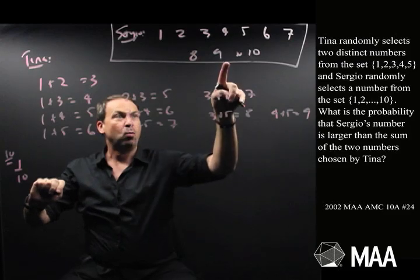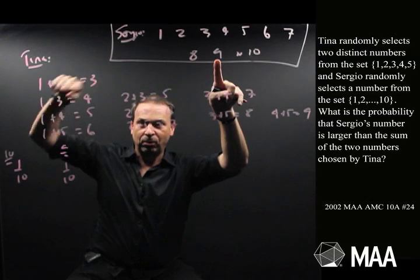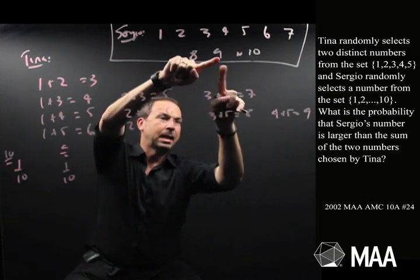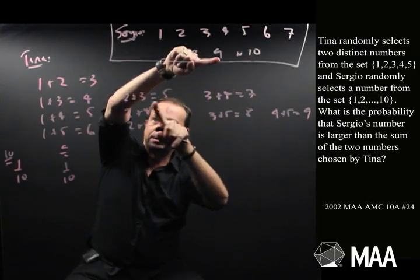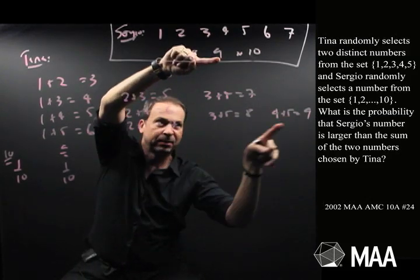Aha! One-tenth of the time, he'll get a 9. So, one-tenth of the time, he'll get a 9. And of all those times he gets a 9, he doesn't win automatically, because there are 10 outcomes for Tina,